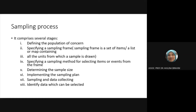Third, specifying the sampling method for selecting items. When you have already identified the sampling frame, you know what type of research sampling applies, and then you identify the method.